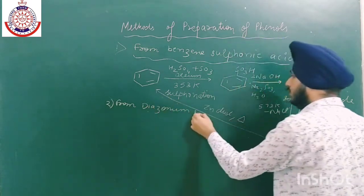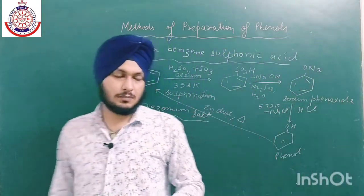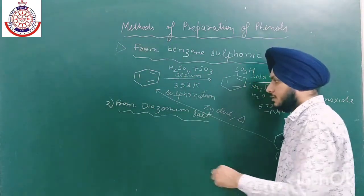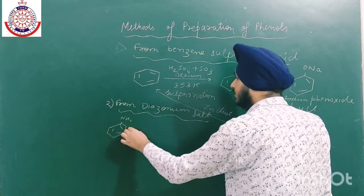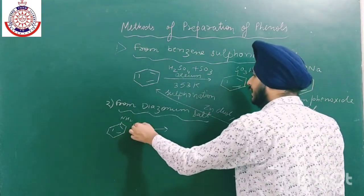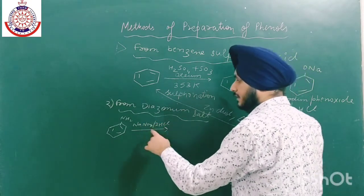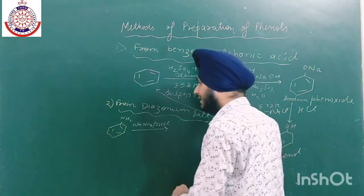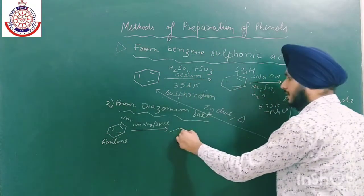For the second method — from diazonium salt — we have already prepared chlorobenzene from diazonium salt by Sandmeyer and Gattermann reactions. Now we will prepare phenol. Firstly, we prepare diazonium salt by reacting sodium nitrite plus HCl with aniline using two moles of HCl. NaNO₂ reacts with HCl to form nitrous acid, which then reacts with aniline.